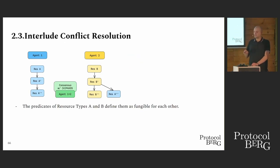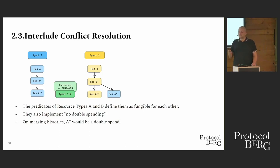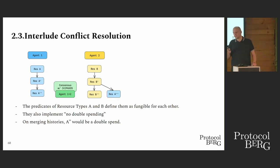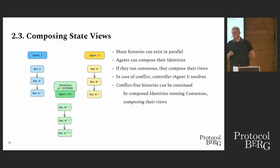Now, what happens if there's a conflict in the histories we want to compose? We need to resolve the conflict. If resources A and B are fungible and we say no double spending — someone in the view of Agent 2 wants to double spend, but in Agent 2's view this would not be a double spend yet, because they don't know what's happening under Agent 1's purview. But on merging histories, A-prime-prime would be a double spend. So we need to resolve the conflict, which is usually the controller's responsibility. We slash it, we're good, we have conflict-free histories, we can compose the identities, run consensus, and compose our views. Going forward, there's one view that both of these trust.